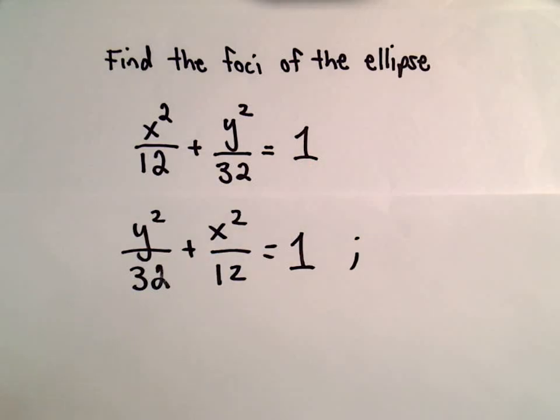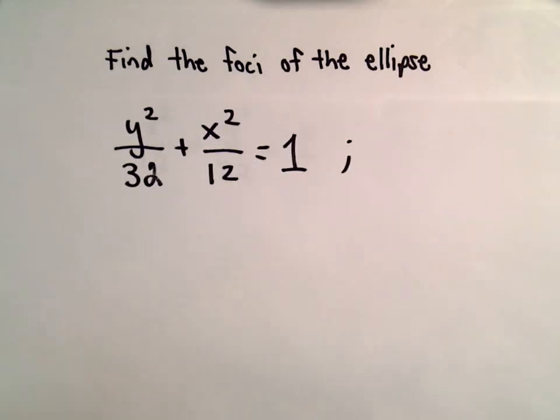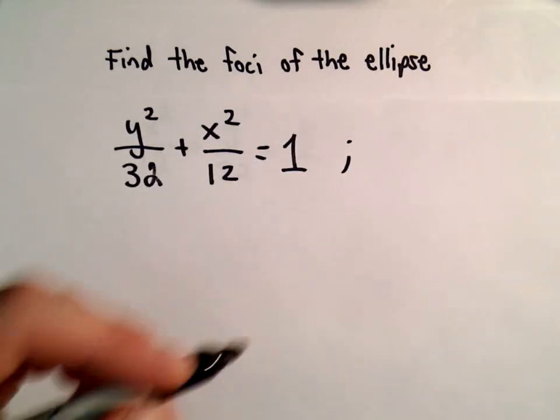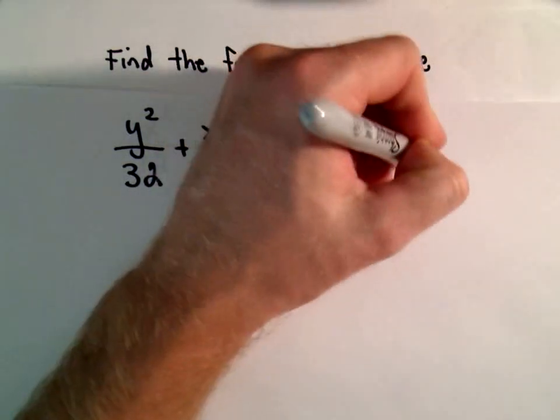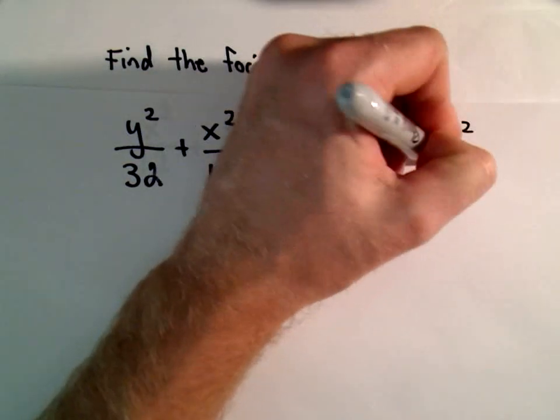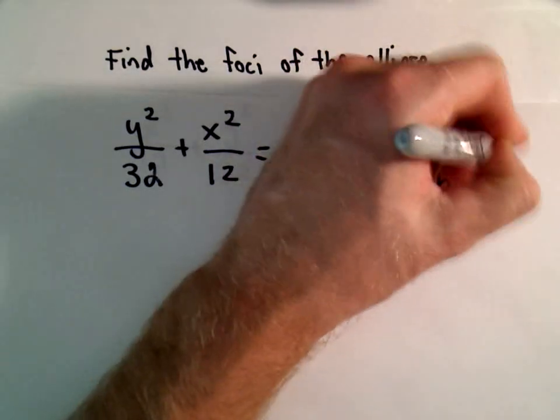A couple things here. Recall that the form is y²/a² + x²/b² = 1.